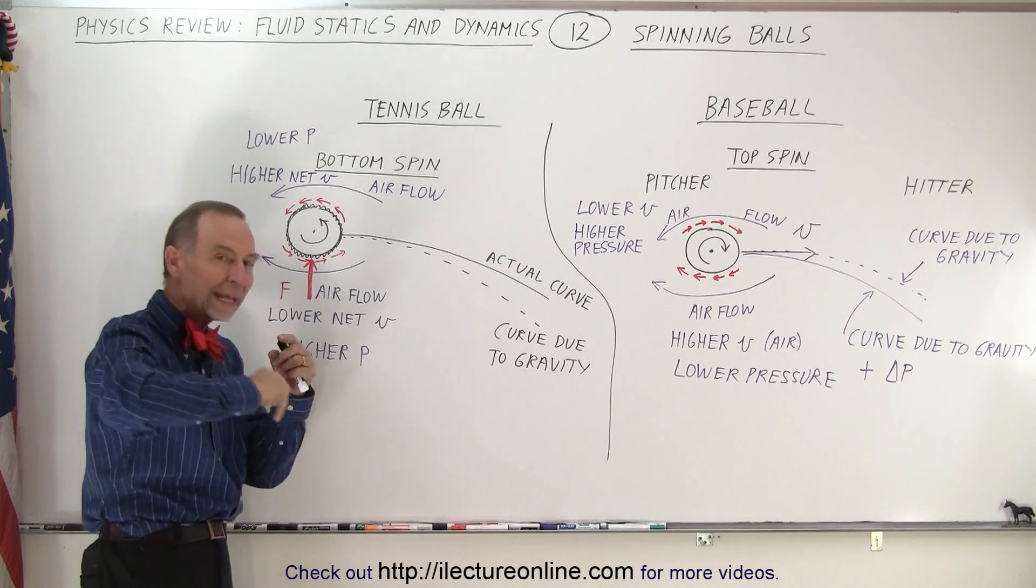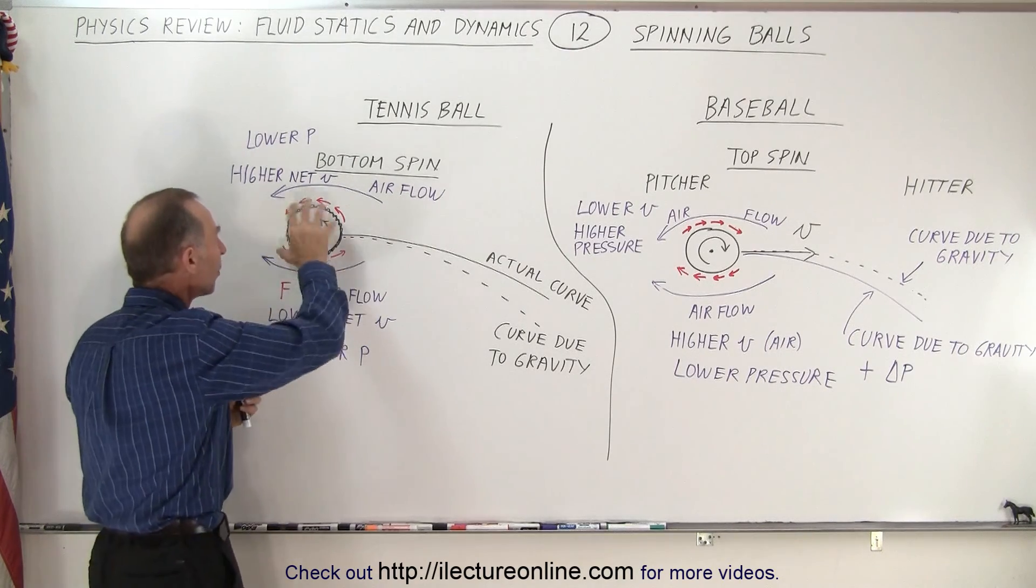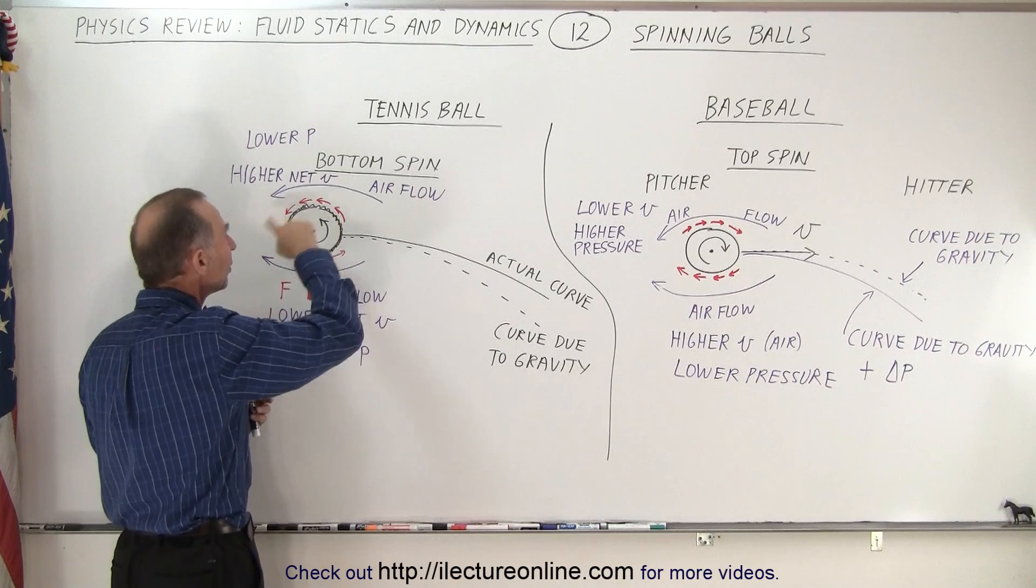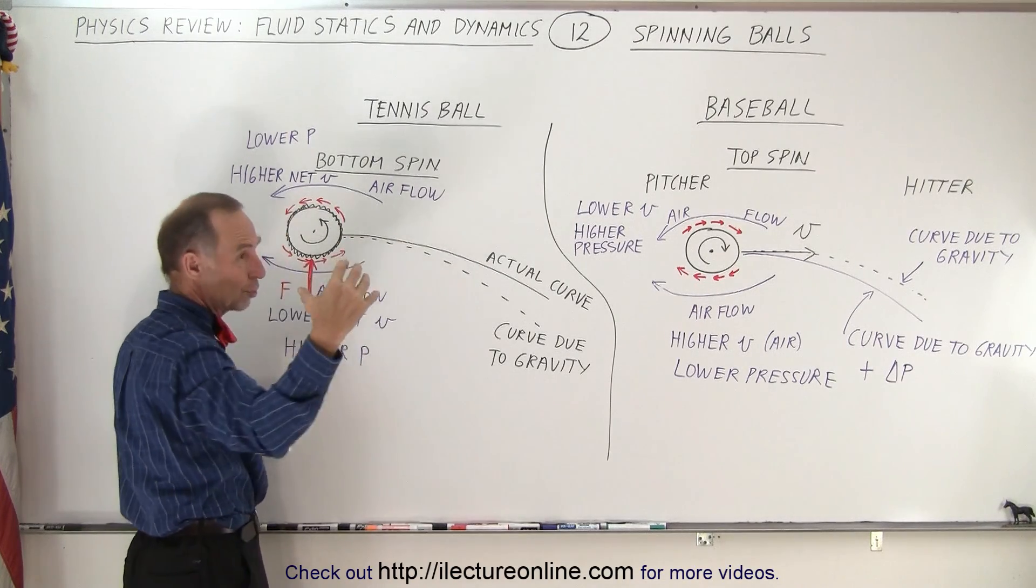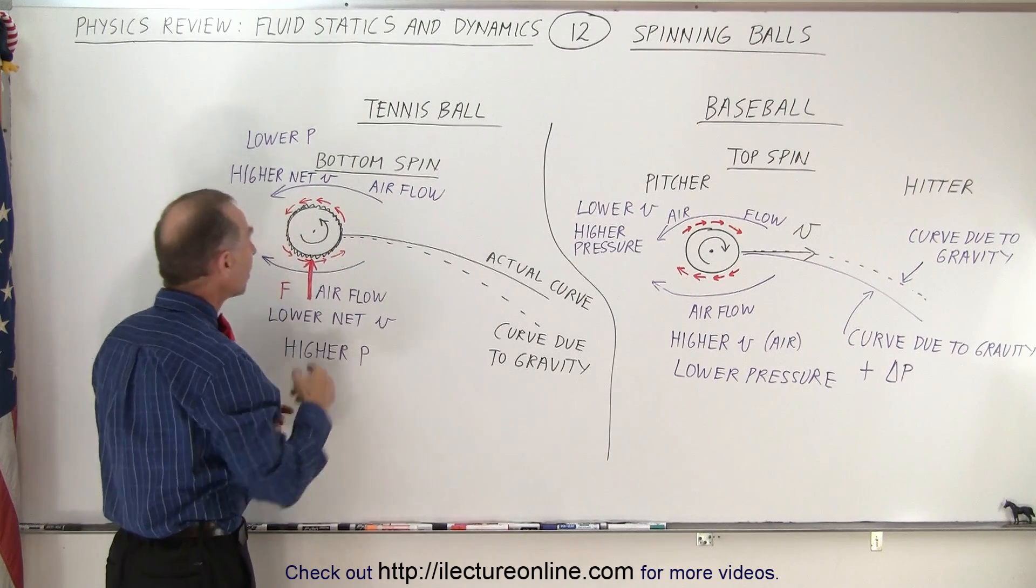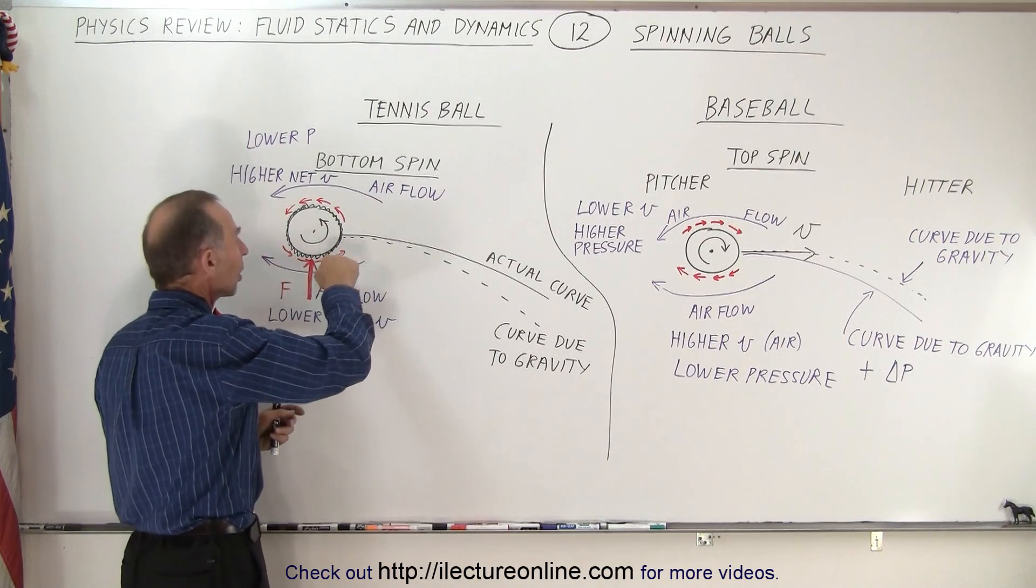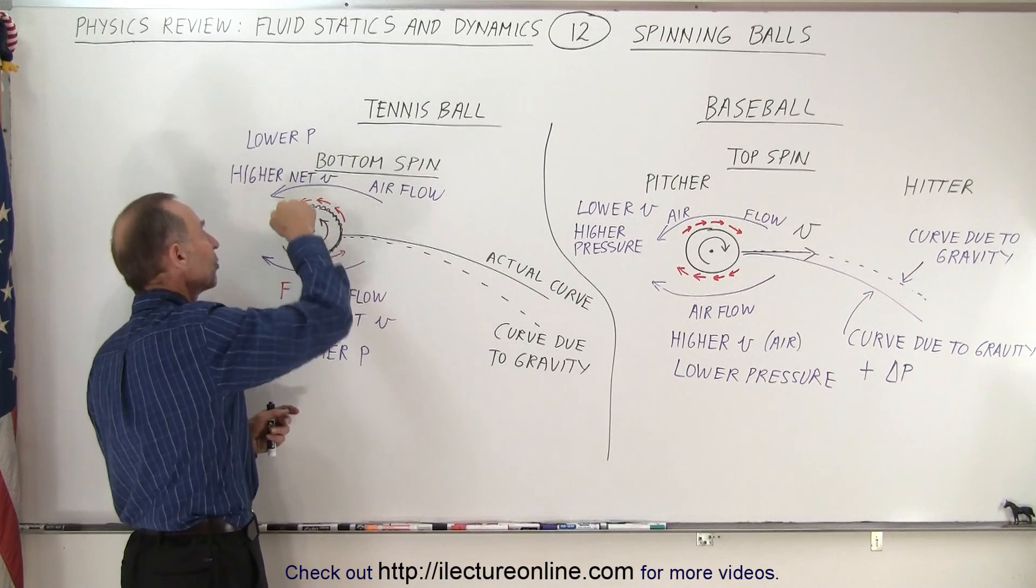As the ball is given what we call a bottom spin, it rotates counterclockwise from your direction. You can then see that air is being pulled along in this direction as well as in this direction. At the top, since the airflow is this way because the ball is moving from left to right.